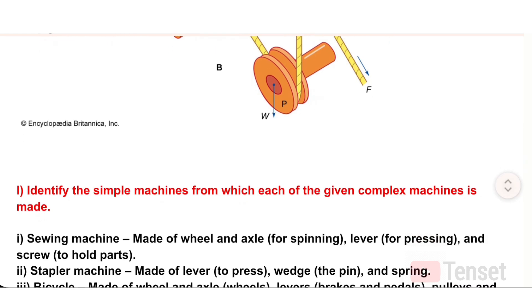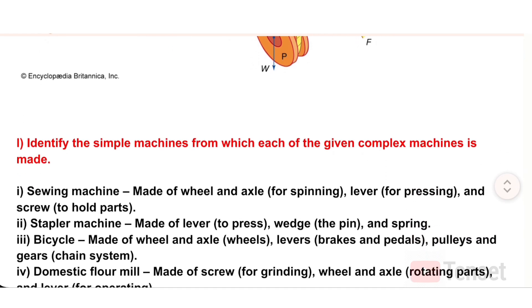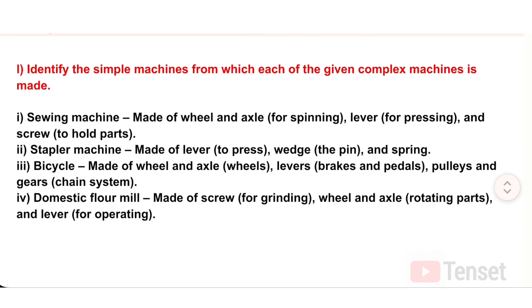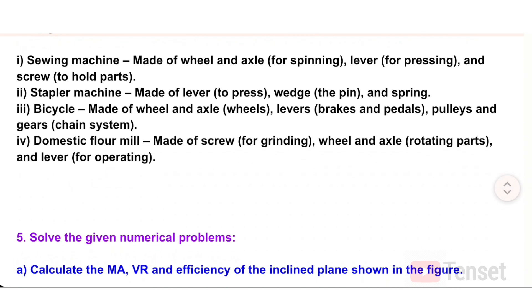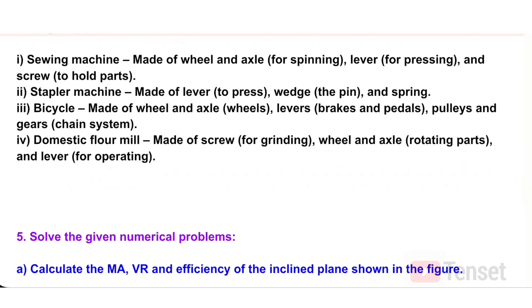L) Identify the simple machines from which each complex machine is made. i) Sewing machine: wheel and axle (for spinning), lever (for pressing), and screw (to hold parts). ii) Stapler: lever (to press), wedge (the pin), and spring. iii) Bicycle: wheel and axle (wheels), levers (brakes and pedals), and pulleys/gears (chain system). iv) Domestic flour mill: screw (for grinding), wheel and axle (rotating parts), and lever (for operating).